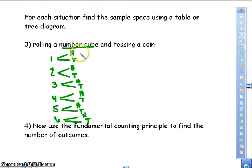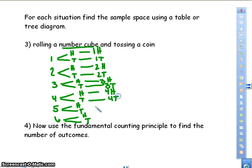Now my sample space is going to be all the outcomes. So I have one heads, one tails, two heads, two tails, three heads, three tails, four heads, four tails, five heads, five tails, six heads, and six tails. This is your sample space.